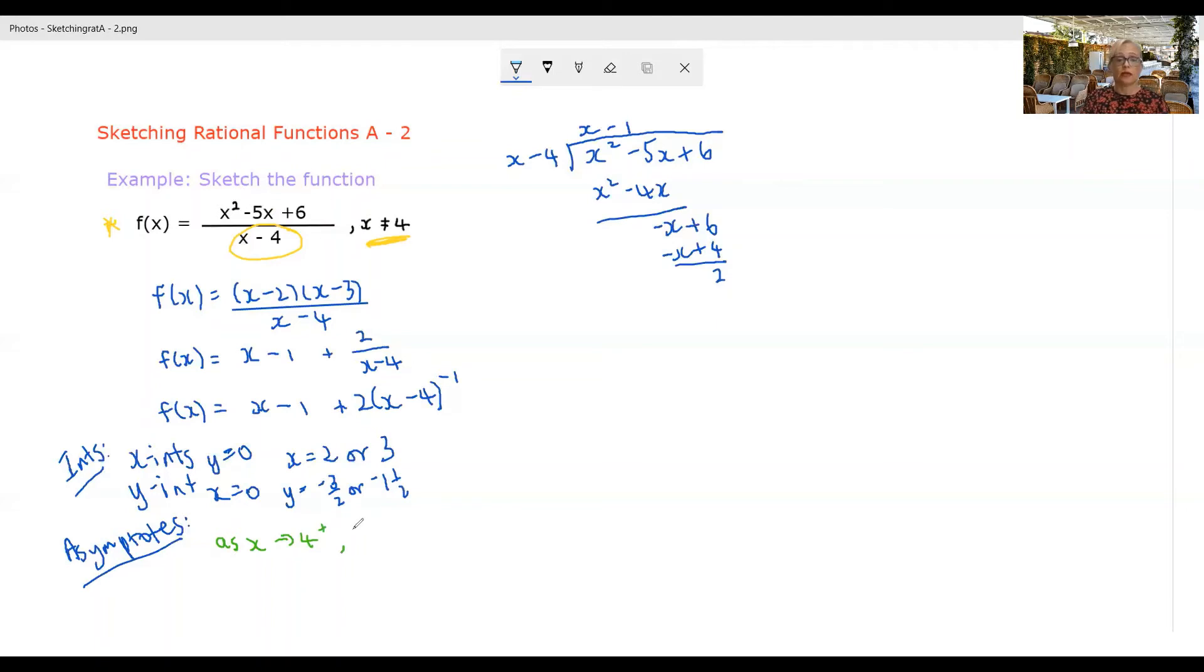Our numerator is going to be four squared minus five times four plus six. So f of x will be tending towards, or even you could put it in here, you're going to get two times one, aren't you? So it's going to be two over a very tiny positive number.